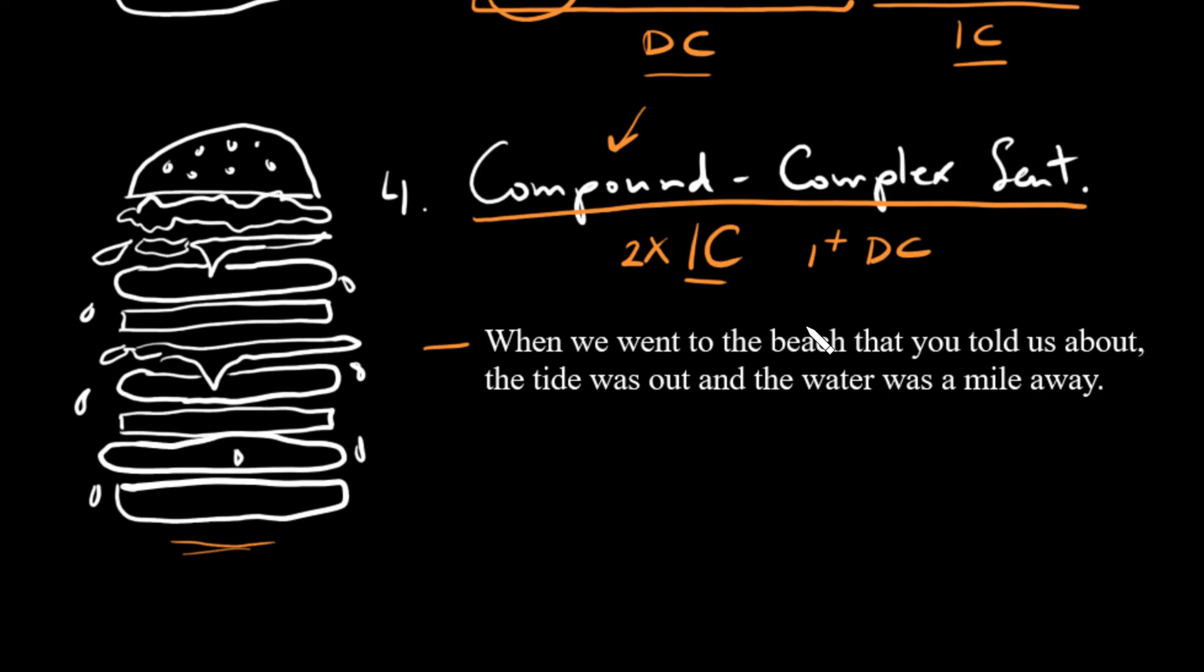We read when we went to the beach. Okay, so there's our first dependent clause. When we went to the beach, we had that one before. That you told us about, that here links to the first part, and this is another dependent clause.